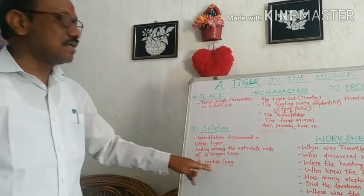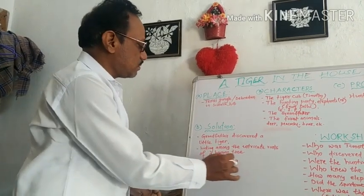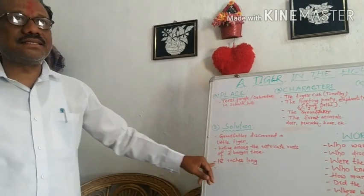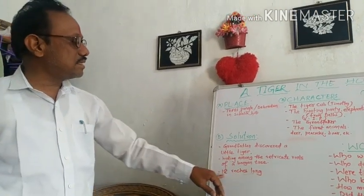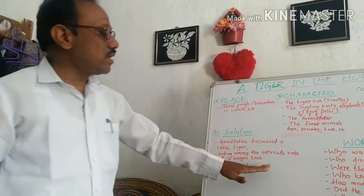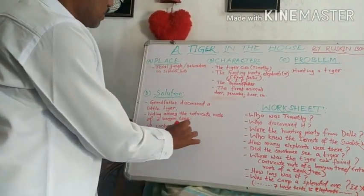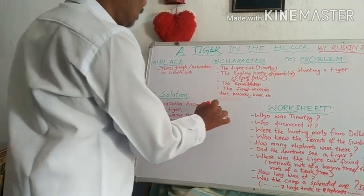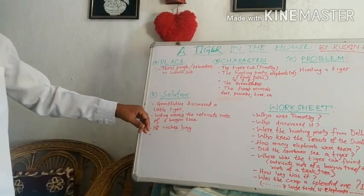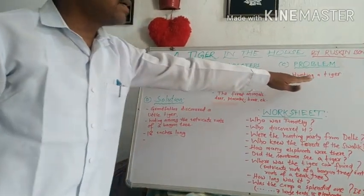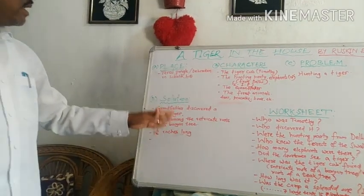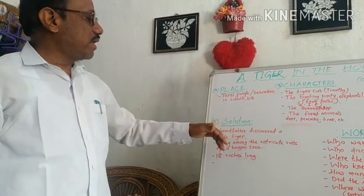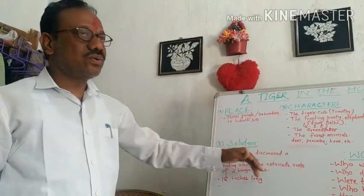How long was it? It was a small one, so it is called a cub. It was only 18 inches long. In this way, the problem was solved by grandfather, because the aim was to find a tiger, and at last they found a small tiger cub which grandfather picked up and brought home.